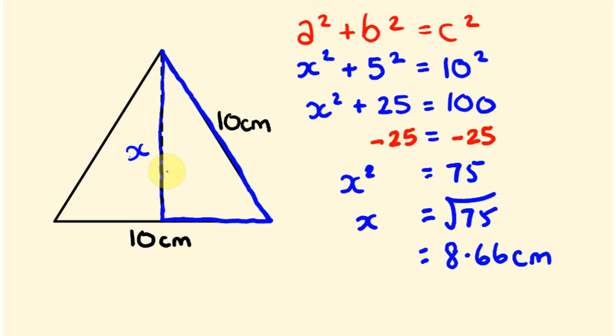You could use this now to work out the area of that triangle — half base times height would give you something like 43. It does have its uses. Anyway, I hope that was of some help. I'm going to leave you with that. See ya, bye.